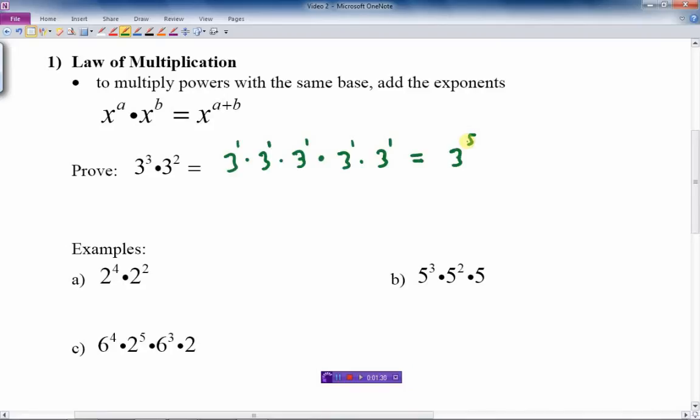And so it just shows it as 3 to the 5. But the easiest way to do that is just to take this expression and add the 3 and 2 together and get 3 to the 5. So there we go, it's just kind of a simple proof of why we just can add the exponents if the bases are the same.